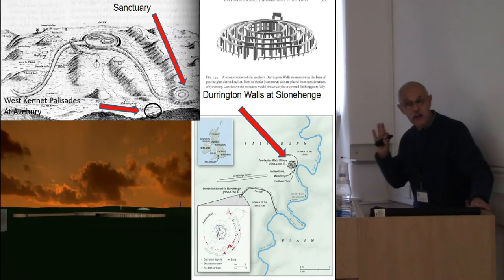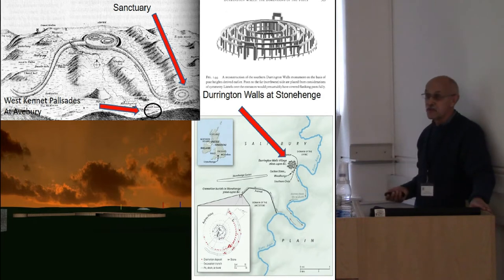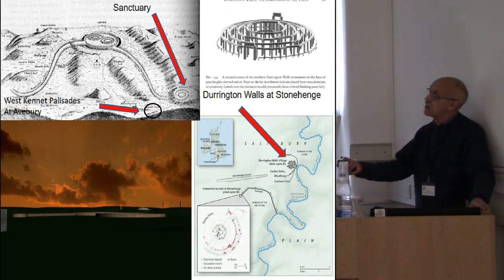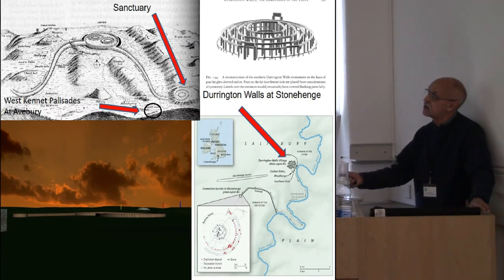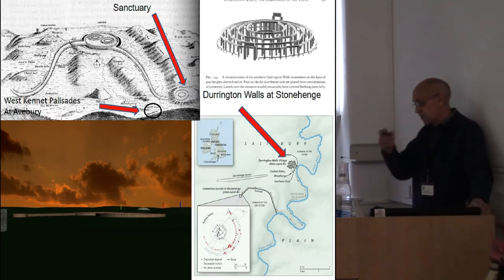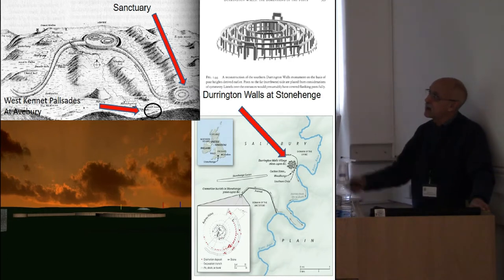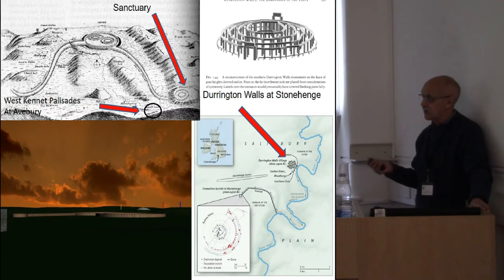Mike Parker Pearson suggests that this model works at Avebury as well, and it seems to, because we have the stone monument of the Avebury Henge and Circle, the vast West Kennet Palisades at the southern end of Waden Hill, and the sanctuary here. We have the two avenues — Beckhampton Avenue and West Kennet Avenue — and Silbury Hill. Here I'm looking at the sanctuary as one part of the monument complex to see whether Mike Parker Pearson's model and the other models will work.